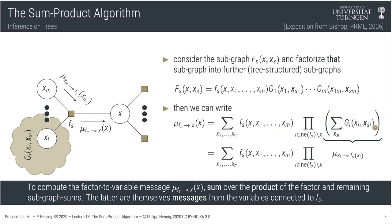These individual one-dimensional arrays—messages from variables to factors—get multiplied with the local factor F, which is a multivariate array. The only distinction between messages from factors to variables and messages from variables to factors is that factor-to-variable messages include this additional factor term. The algorithm's name comes from this algebraic structure: the messages sent from factors to variables are a sum over a product of terms—hence the sum-product algorithm.